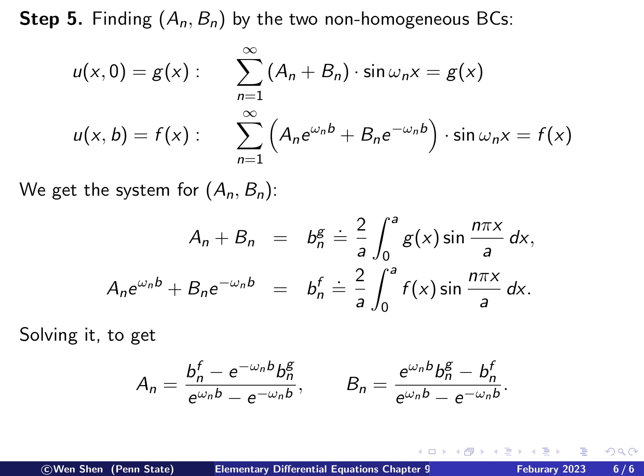So now let's find A_n and B_n by the two non-homogeneous boundary conditions. The first one is when y is 0, this is the function g(x). You put in y equals 0, and then exponential gives you 1 and 1. So you get just A_n plus B_n times the sine function x equals g(x). We make the observation that this here is a Fourier sine series for g, where A_n plus B_n is the coefficient. So we can write A_n plus B_n equal to this b_n^g. That's the Fourier sine series coefficient for the function g with index n. And this we know the formula.